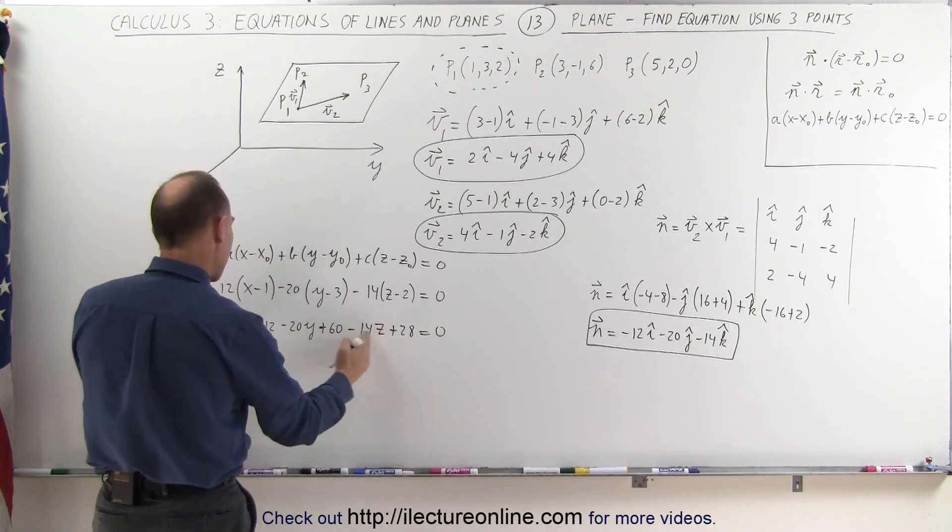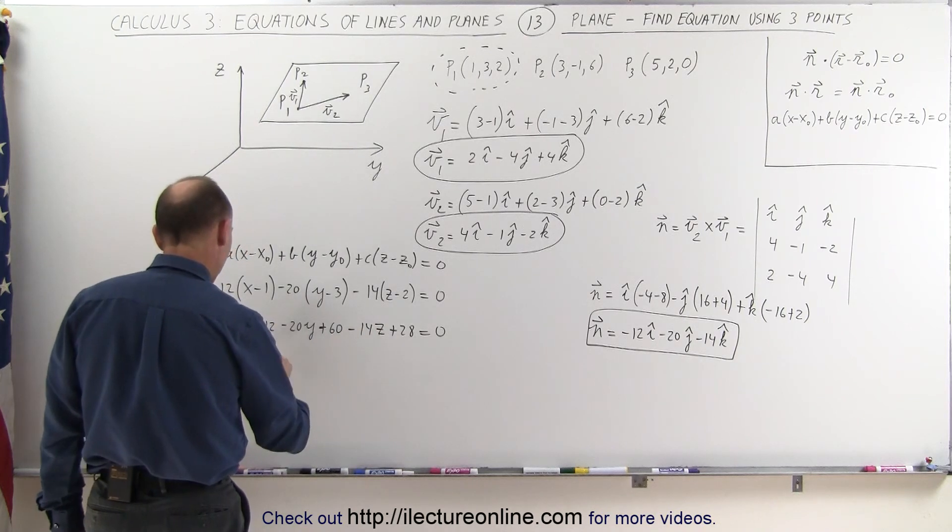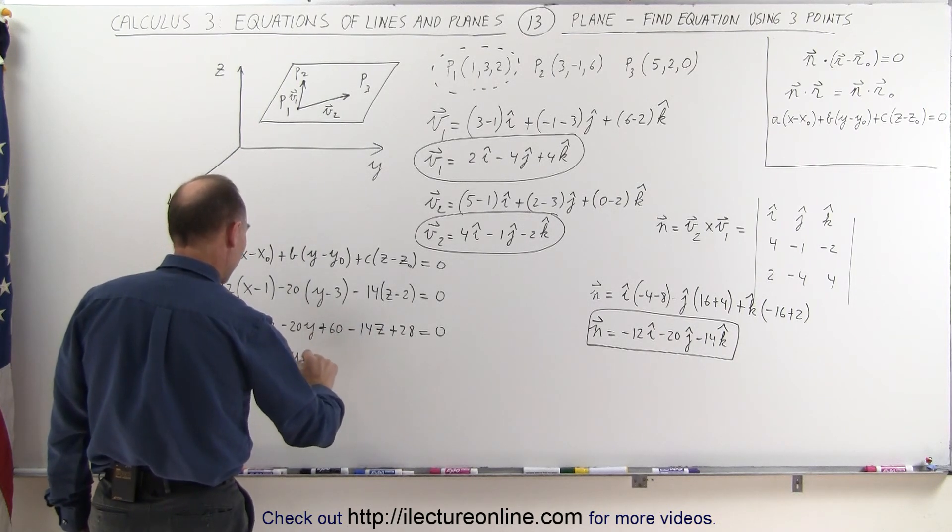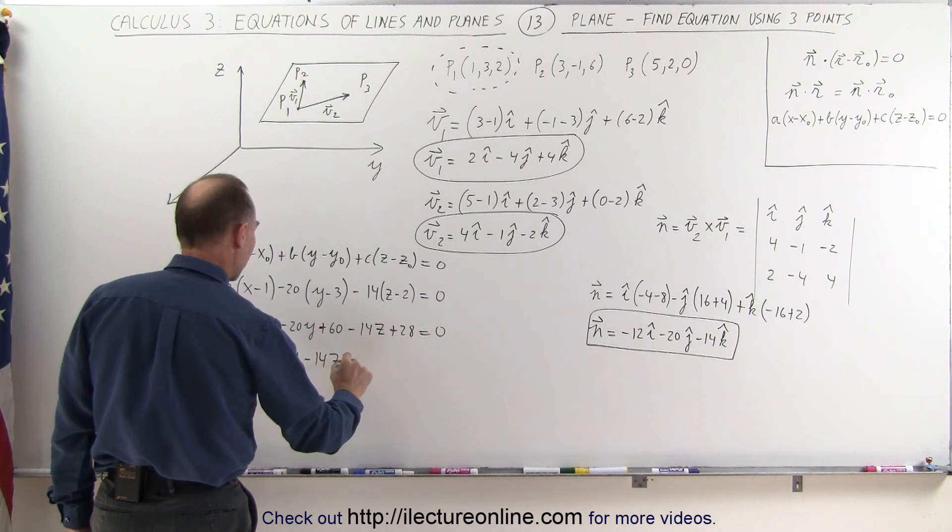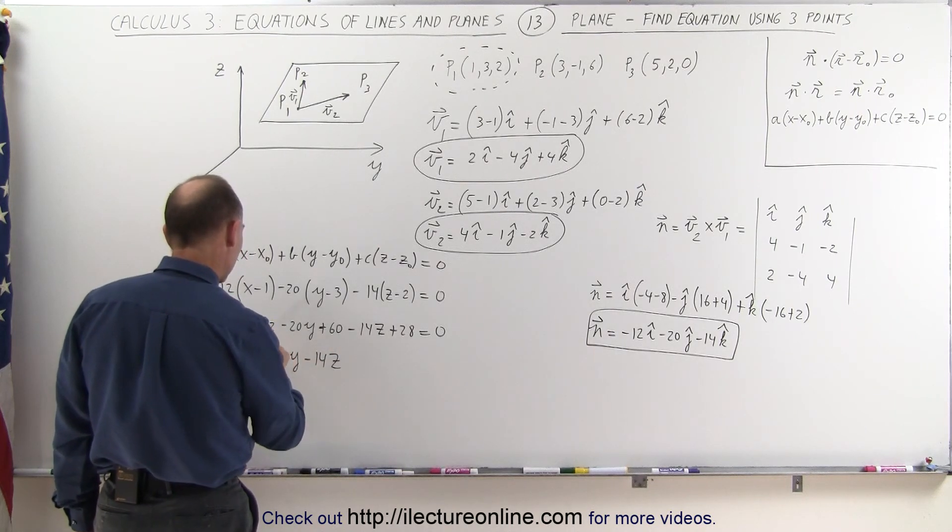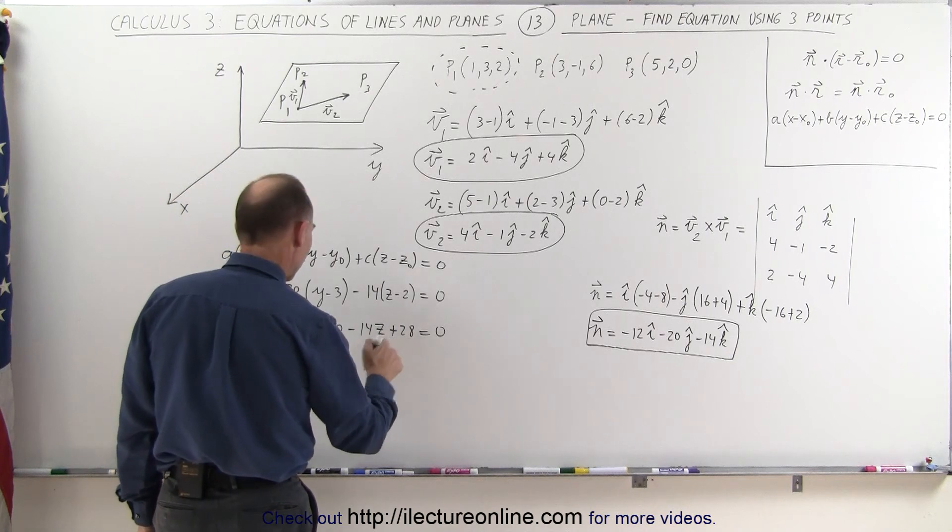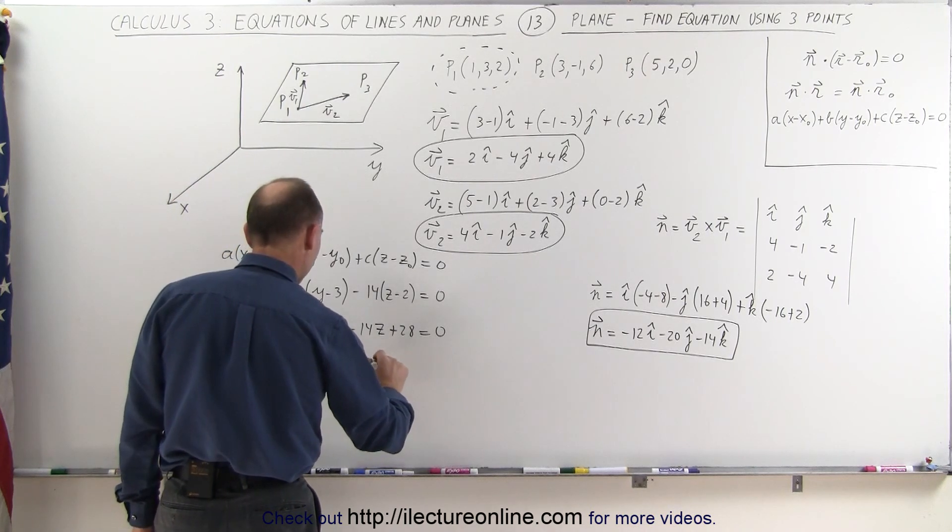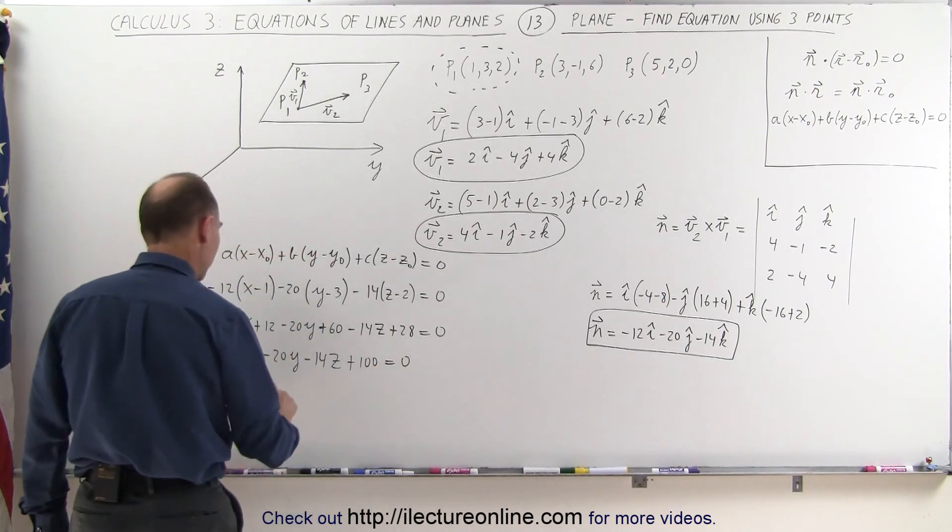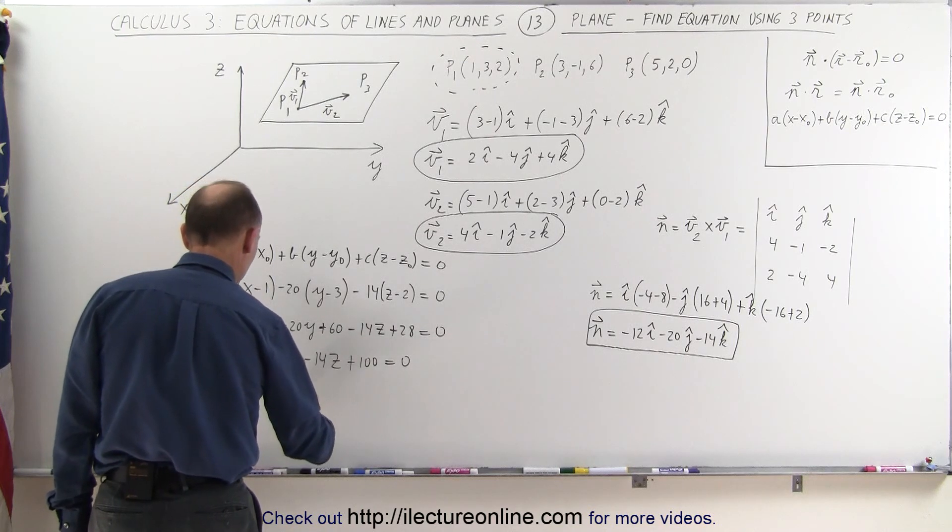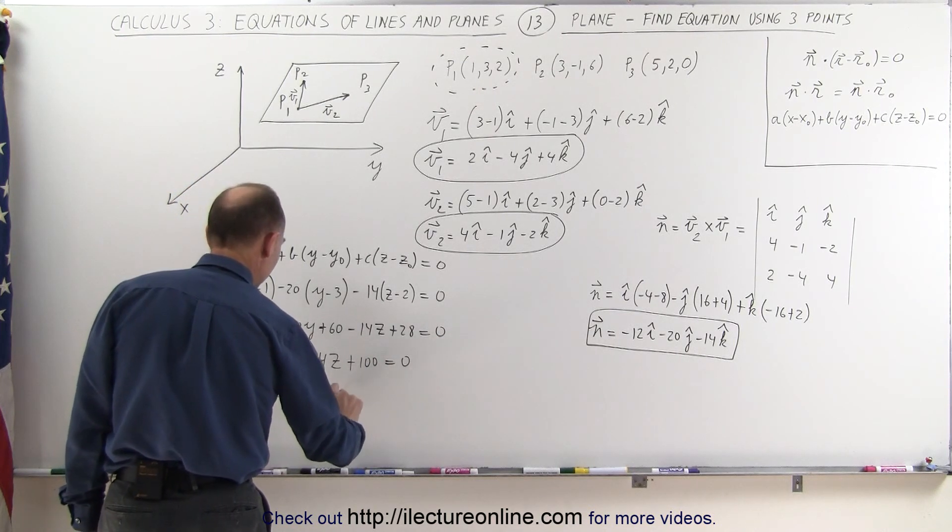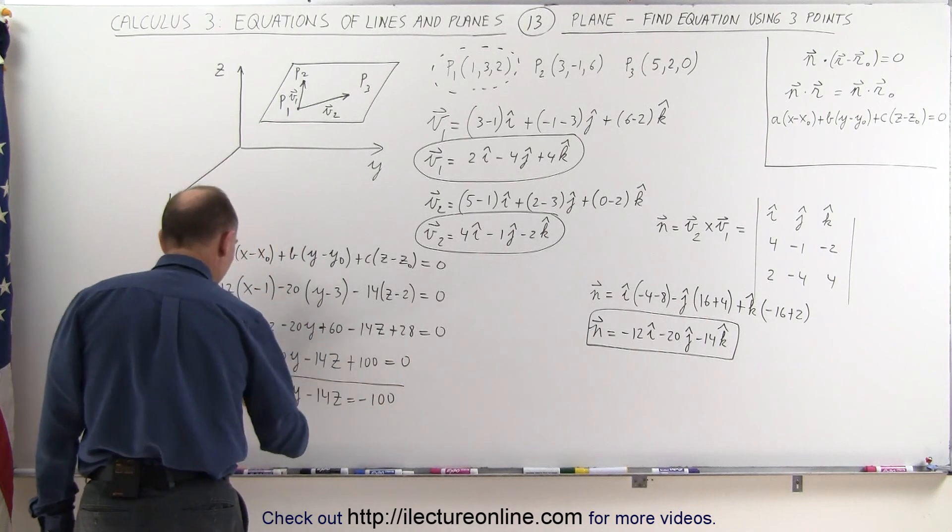So combining all the x, y, and z's here, we get -12x minus 20y minus 14z, and then combining 12 and 60 is 72, plus 28 that's 100, plus 100 equals 0, which means that -12x minus 20y minus 14z is equal to -100.